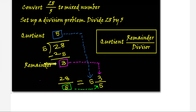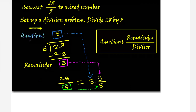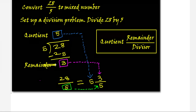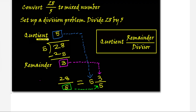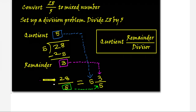We get 3. There is no other number to bring down, and we cannot divide 3 by 5, so we stop here. 3 is the remainder and 5 is the quotient. The quotient is the answer, the remainder is whatever is left after dividing, the dividend is 28, and the divisor is 5.